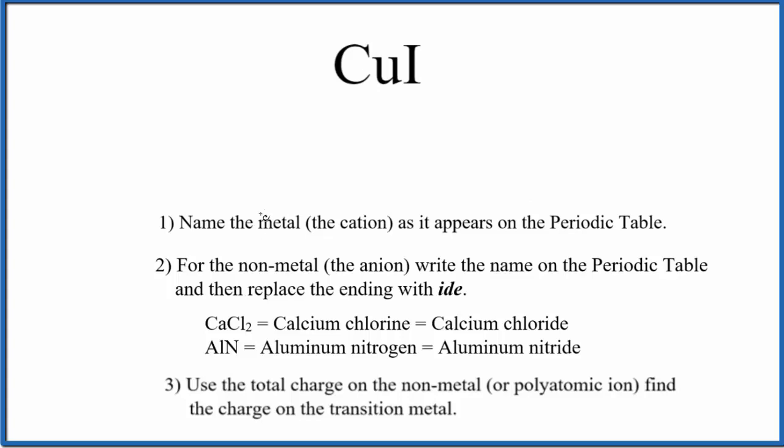We'll use these rules here. First, we're going to name the metal, that's the cation, the positive one, that's copper. For the non-metal, we'll just write the name as it appears on the periodic table, that's iodine.